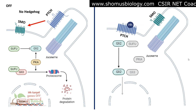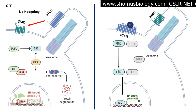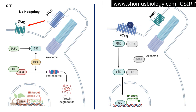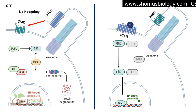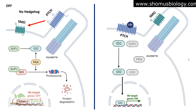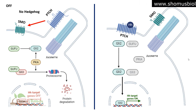As GLI2 is now free, GLI2 will go inside the nucleus and interact with the DNA at the specific promoter region, which will turn on the transcription of Hedgehog target genes. The mRNA is made and transported into the cytosol, where proteins are produced — these are known as the Hedgehog target proteins.